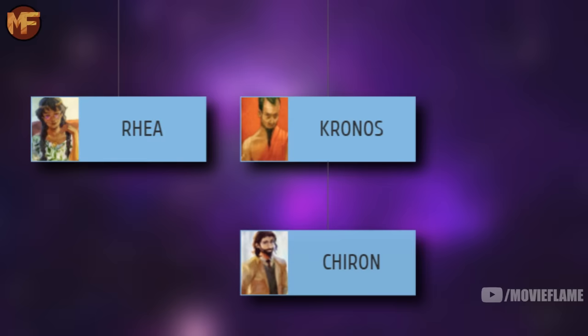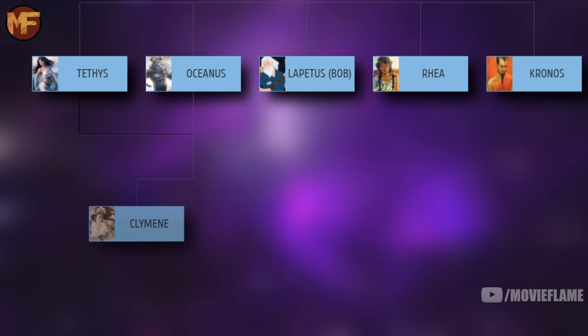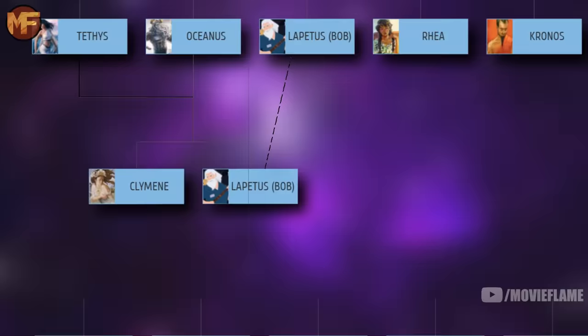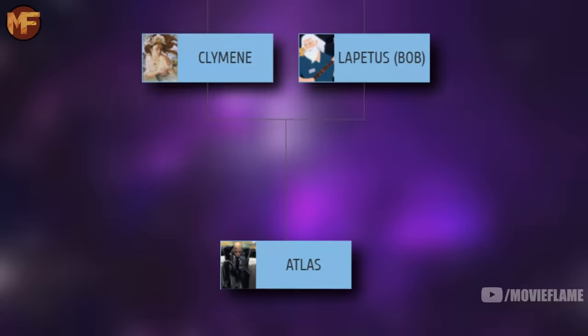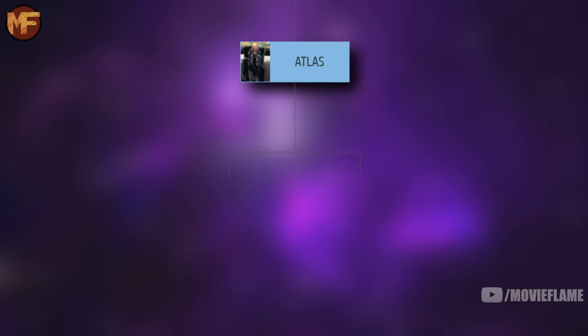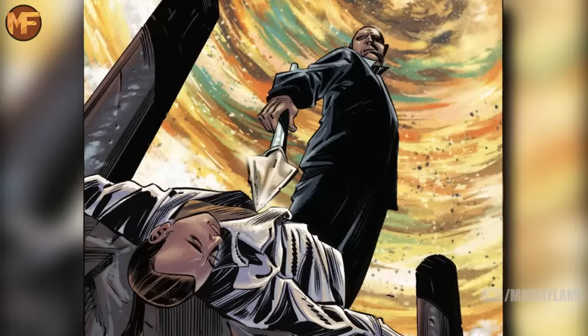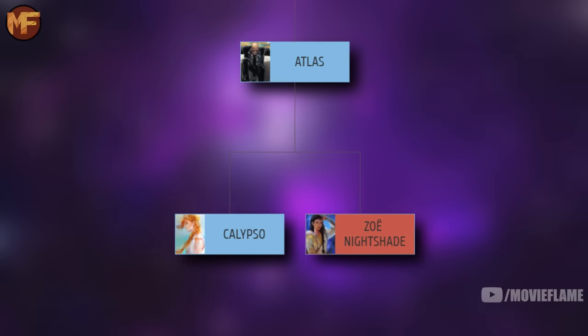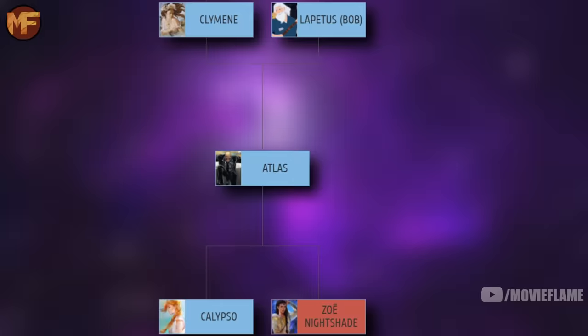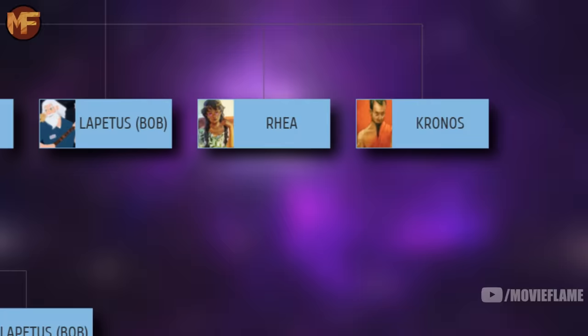Going back to Orenos and Gea's five kids: they had Tethys, Oceanus, Iapetus (also known as Bob), Rhea, and Kronos. First, Kronos connects Chiron, who was sired by the Titan king. Then the brother and sister Tethys and Oceanus had a daughter named Clymene, and Clymene ended up marrying her uncle Iapetus. Together Clymene and Iapetus had the Titan Atlas, the main villain of the third Percy Jackson book, known for holding the sky up as punishment. Atlas connects us to the demigod Zoe Nightshade, a Hunter of Artemis who was actually killed by her own father Atlas in The Titan's Curse. Atlas also connects us to his daughter Calypso, the goddess trapped on the island Ogygia, whom Leo Valdez would later fall in love with.